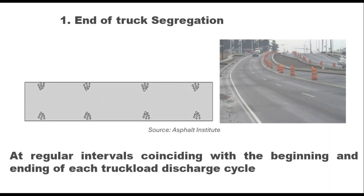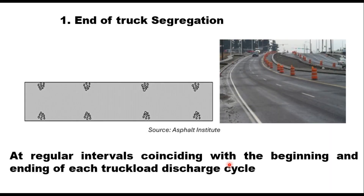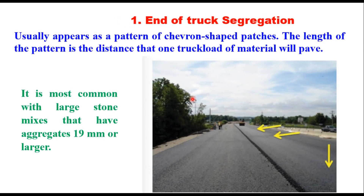The first is end-of-truck segregation. This type of segregation can occur at regular intervals coinciding with the beginning and end of each truck load discharge cycle. If the trucks are improperly loaded and unloaded, a segregation-prone mix will segregate when the mix starts being unloaded and then again when the last amount of mix comes out of the truck. It can be seen as regularly spaced repetitions of segregated areas down the road. It usually appears as a pattern of chevron-shaped patches.